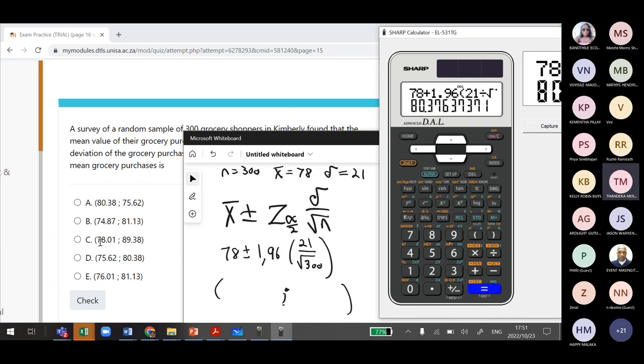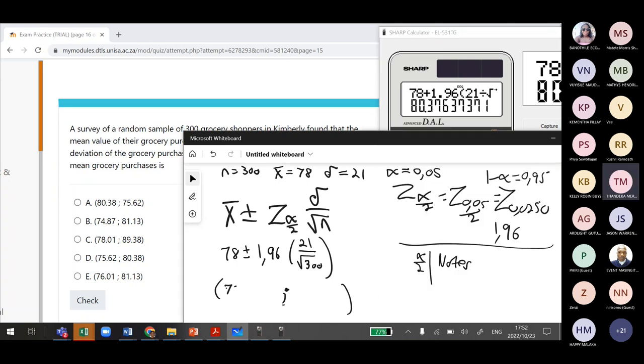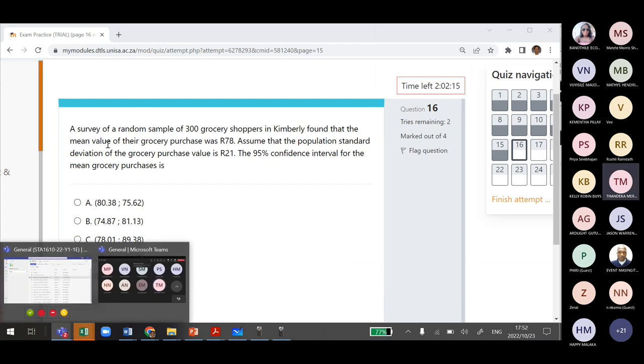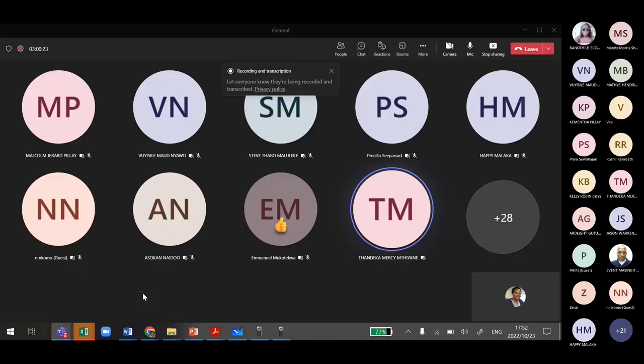And the upper area will be, or the upper side, the plus side will be 80.376. So the answer is option D, right?